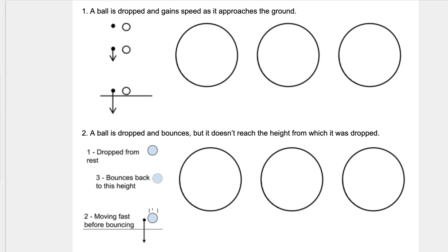The ball gains speed as it approaches the ground and we want to draw energy pie charts. Basically we want to do the work of the simulation — if you have questions you could go to the PHET simulation and run it to see how closely it matches your prediction. If I'm starting from some height, work must have been done on the ball to get it away from the earth. At position one, dropped from rest, the entire pie chart would be blue — all gravitational potential energy, E subscript G.